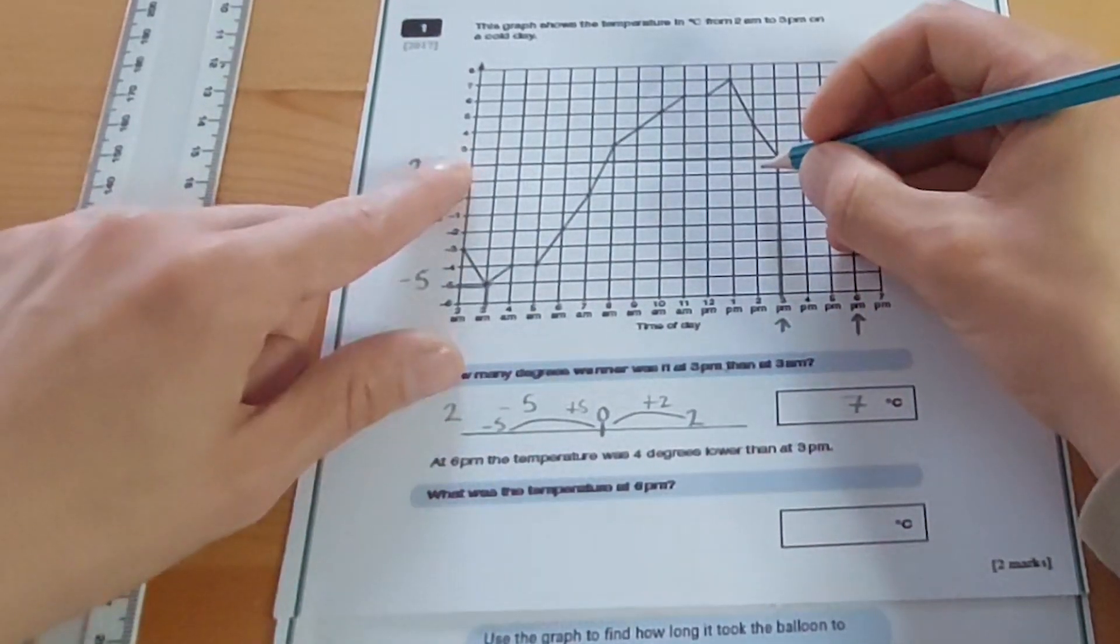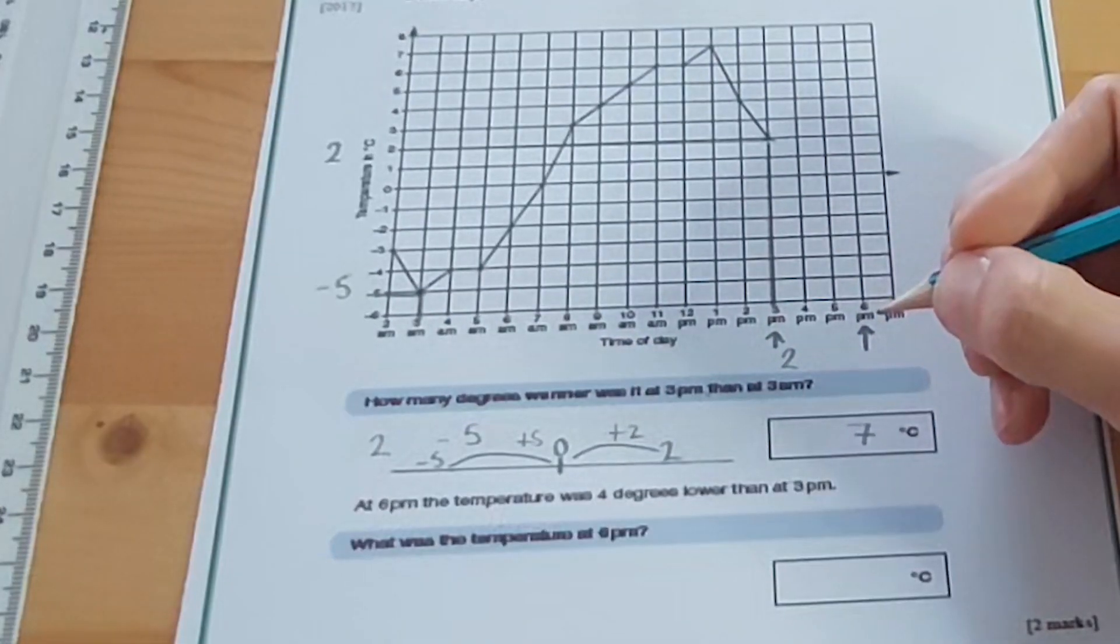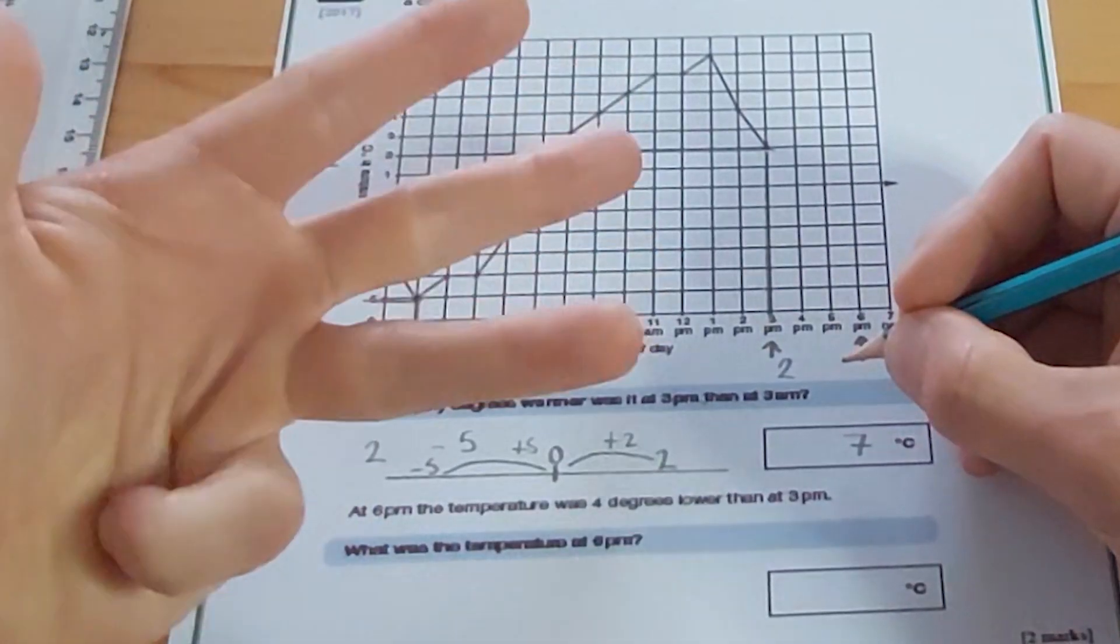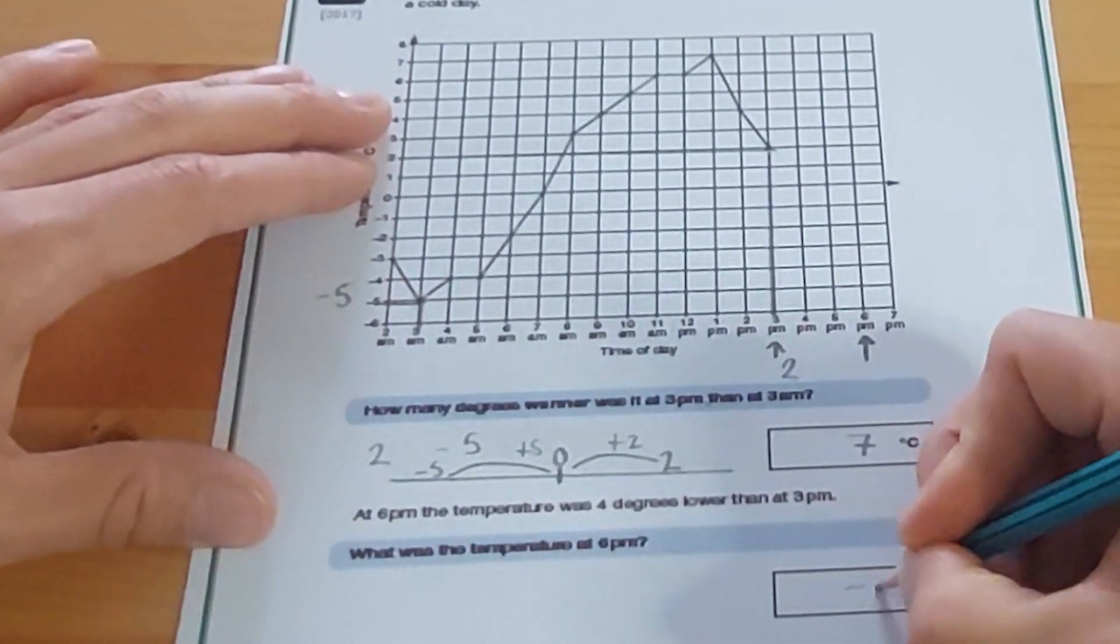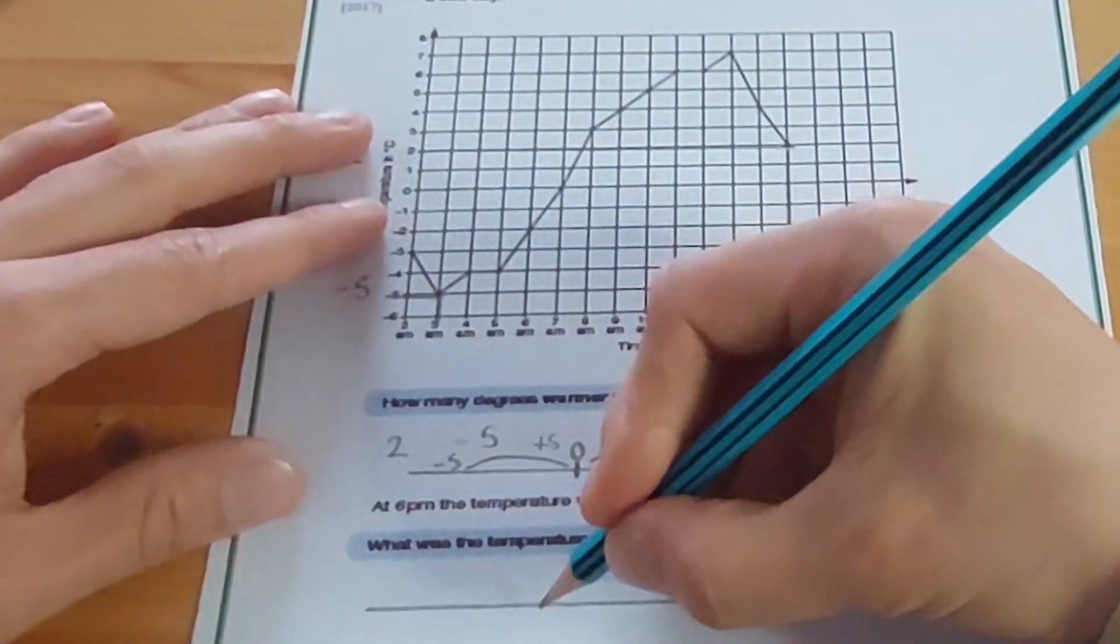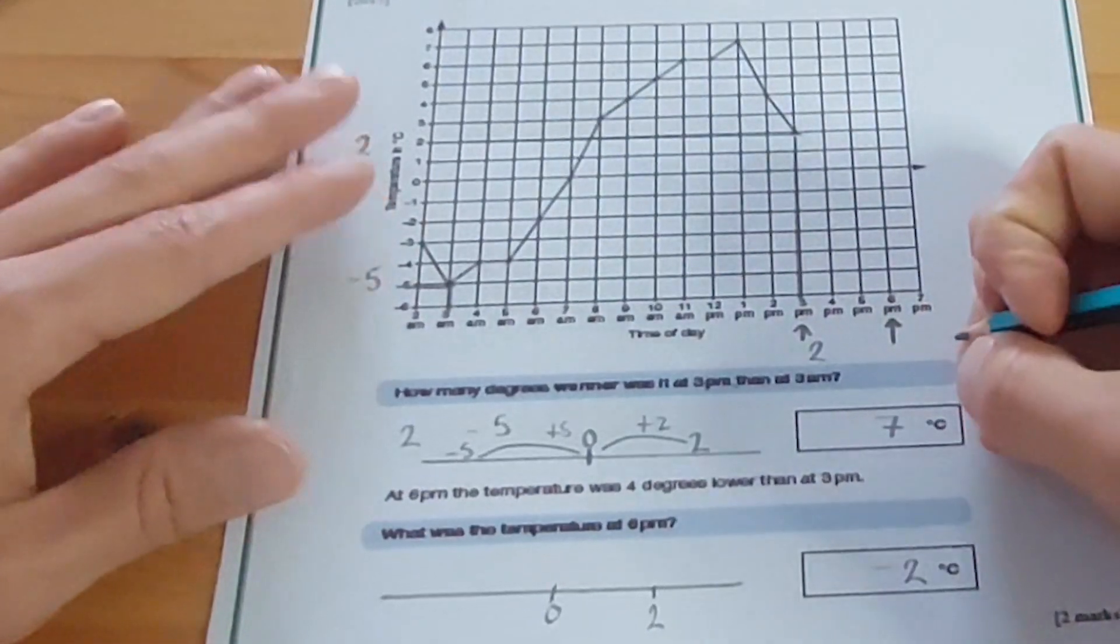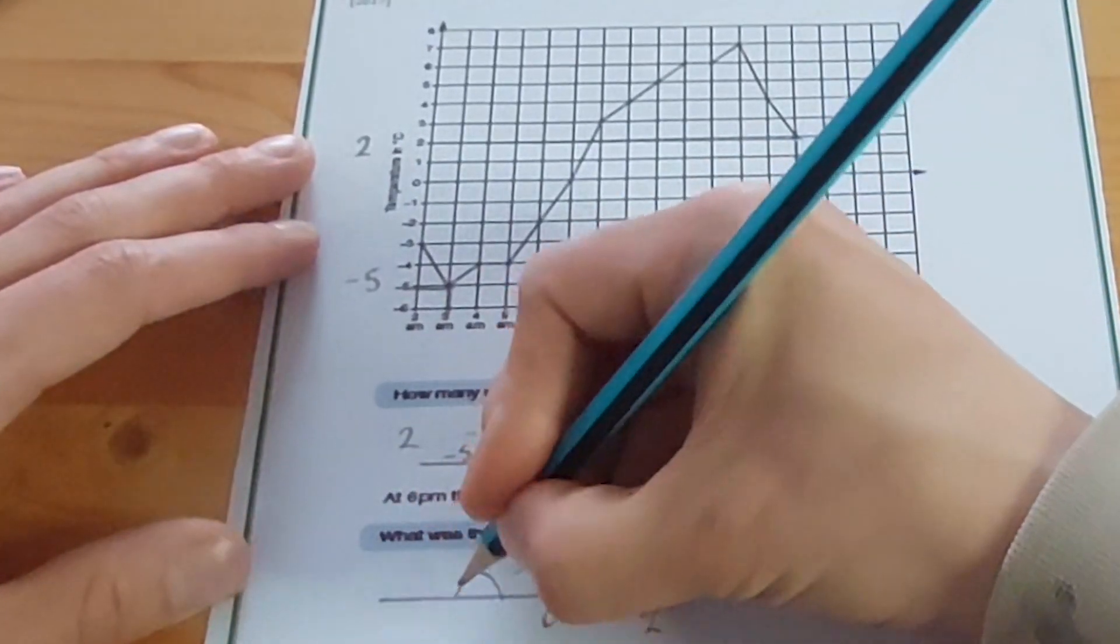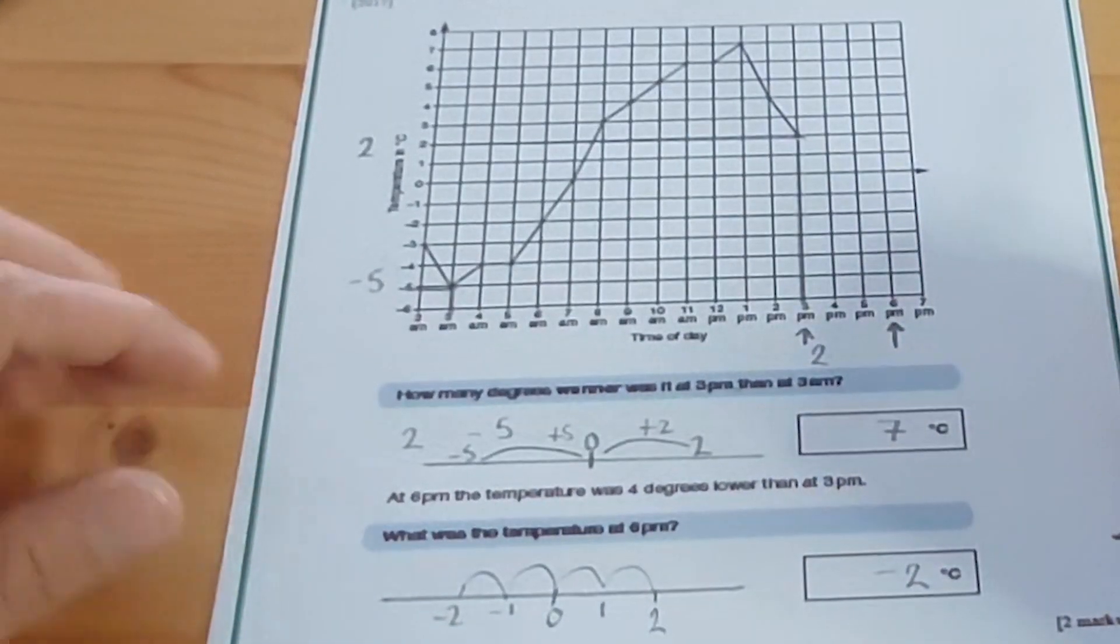At 3pm, as we found out before, it was 2 degrees. If I go 4 degrees lower than 2, I'm going to count back 4: minus 2, 1, 0, minus 1, minus 2. I'm counting back 4, so the temperature was going to be minus 2 degrees centigrade. They must write the answers in the boxes to get those correct answers. Just to show you what I did there again, if I draw a number line here to help me work it out, at 3pm the temperature was 2, positive 2, and it said the temperature was 4 degrees lower. So I'm going to go 1, 2, 3, 4, which gets me to minus 2, going through 1, 0, and minus 1. So the temperature 4 degrees lower than 2 would be minus 2.